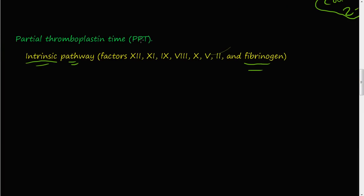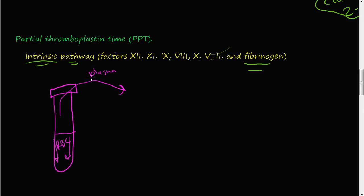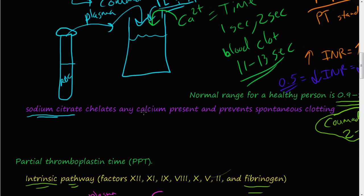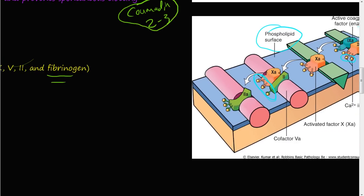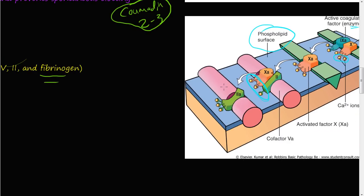For the PTT, the same basic procedure applies: blood is drawn, spun down, and the plasma is extracted. The plasma is treated with sodium citrate to remove all calcium. Then phospholipids are added, because you need a phospholipid surface to complete this pathway.